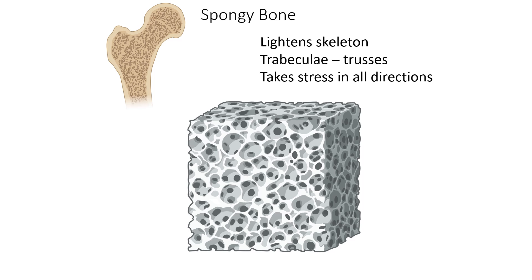Much like the supports of a bridge that span a river, spongy bone has structures called trabeculae. Trabeculae are like trusses or supports, very similar to the structural trusses that support bridges. Trabeculae are curving structures of sheets and layers of bone called lamellae. Because trabeculae are found in spongy bone in almost infinite orientations — some going this way, some going that way — this is what allows spongy bone to take stress from all directions, making it superior to compact bone, which is only able to withstand force in one or very few directions.